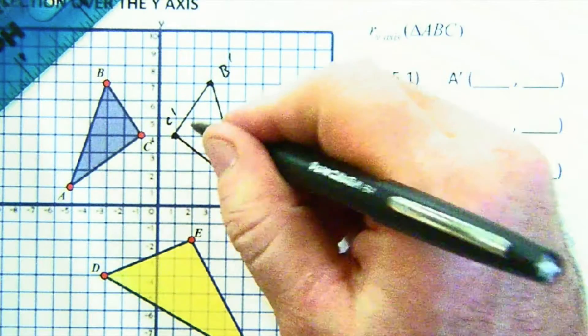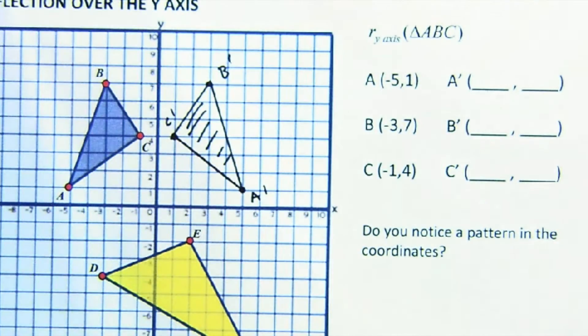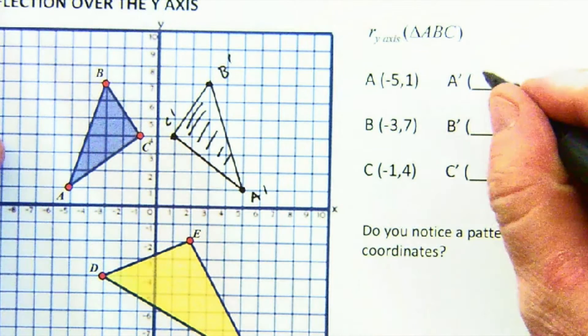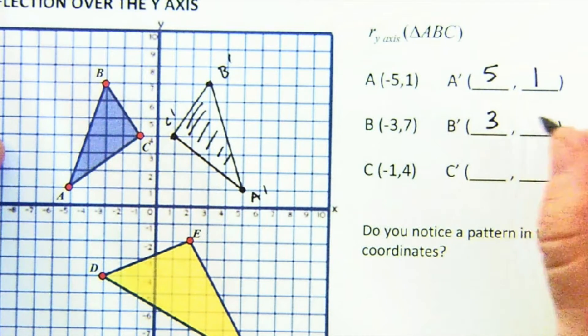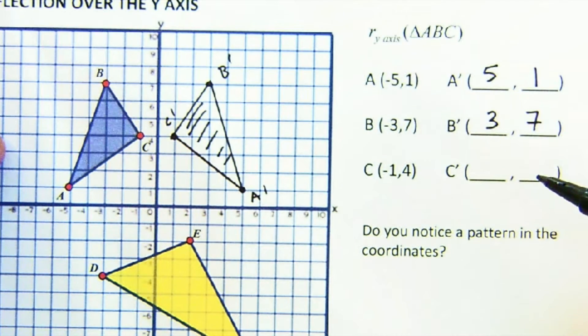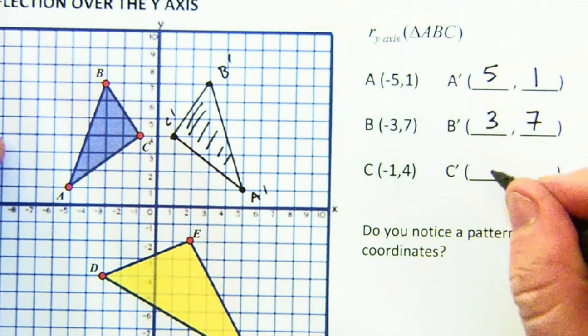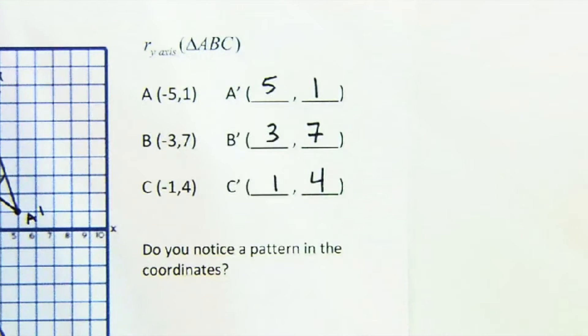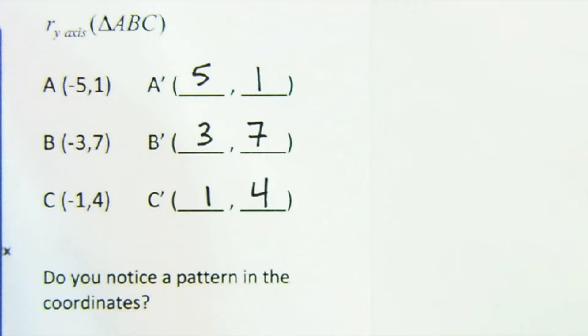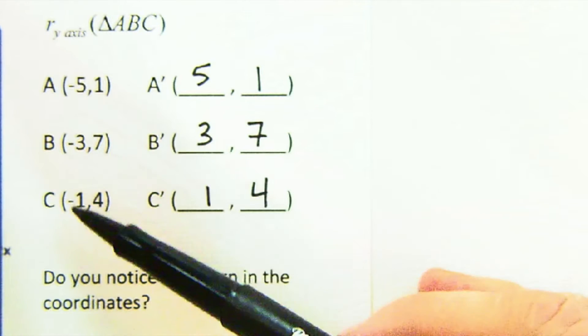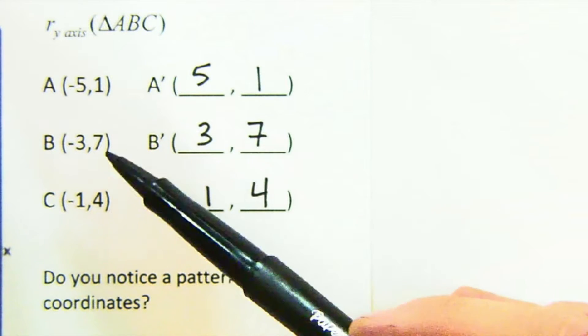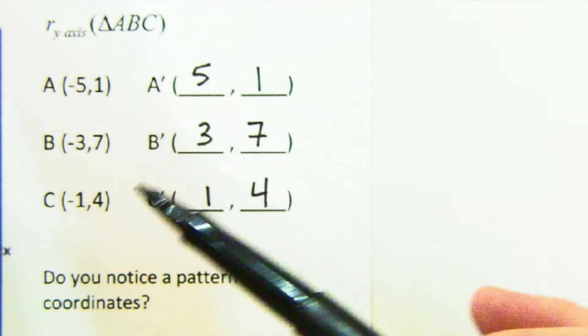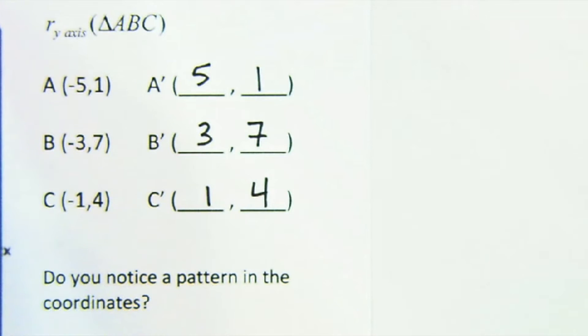Why we're doing this, though, is to look at what's taking place with the coordinates. So, A would be found at 5 and 1. B would be found at 3 and 7. And C would be found at 1 and 4. Now, let's look closely at what's taking place here. This is the original pre-image, and here's our image points. Negative 5, 1 versus 5 and 1. Negative 3 and 7 versus 3 and 7. Negative 1 and 4 versus 1 and 4. You know what took place.